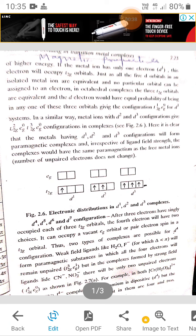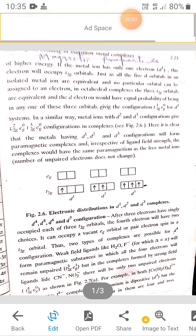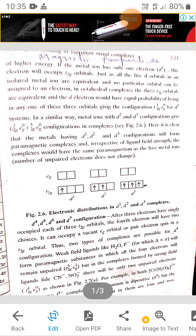These electrons are present in T2G orbitals. Just as all the 5 D orbitals in an isolated metal ion are equivalent and no particular orbital can be assigned to an electron,